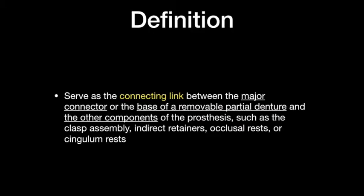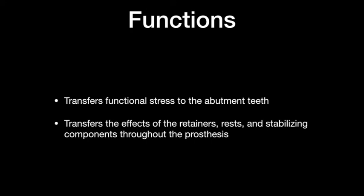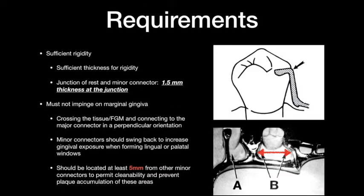After the Major Connector, let's look at the minor connector. The minor connector is defined as a connecting link between the major connector or the denture base and the other components of the removable partial denture. Its function is to transfer functional stress to the abutment teeth, and to transfer the effects of a retainer, rest, or stabilizing component throughout the prosthesis.